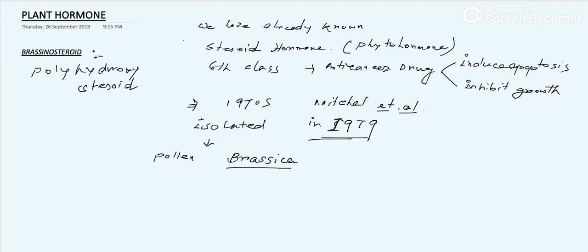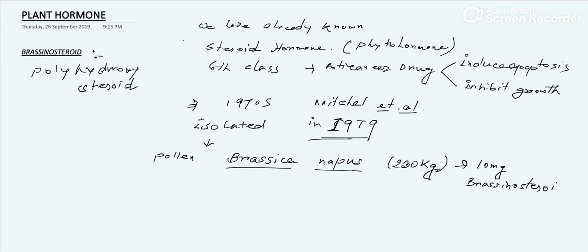The amount obtained is very little — from a large amount of around 230 kg of Brassica napus, we get only 10 mg of brassinosteroid. So to summarize: brassinosteroid is a steroid plant hormone, a polyhydroxy steroid, acts as an anti-cancer drug, first discovered by Mitchell et al. in the 1970s, isolated in 1979 from the pollen of Brassica napus, and the yield is very little.